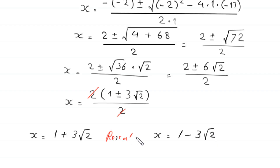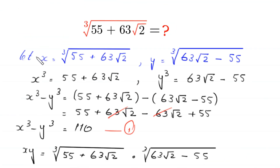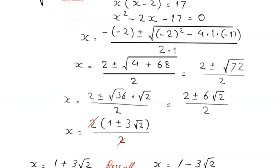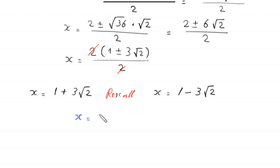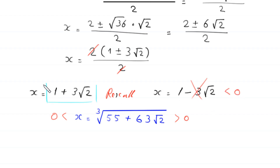Recalling that x = cube root of (55 + 63√2), the right-hand side is greater than 0, so x must be positive. Since 1 − 3√2 < 0, this value is rejected. Therefore the final answer is x = 1 + 3√2.